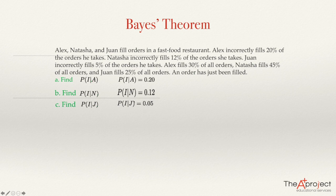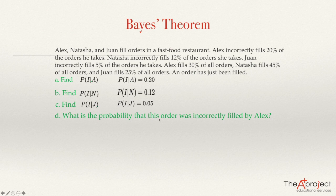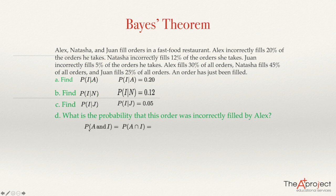We notice here we can find some conditional probabilities from the information the problem is giving me. You get another question. This question is: what is the probability that the order that was filled was incorrectly filled by Alice? So there is an order now, and we want to know what is the probability that this order is filled incorrectly and also filled by Alice — that is the probability of A AND I, the probability that the order was filled by Alice and at the same time was incorrectly filled.